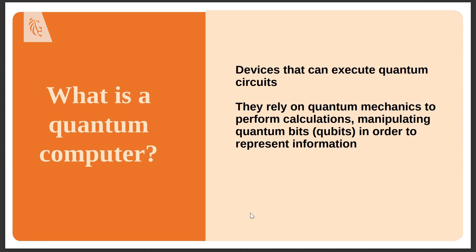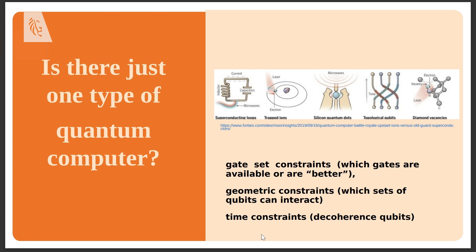Different technologies differ in their available gates, gate speeds, and qubit connectivity. There are also geometrical constraints: in most technologies qubits cannot all interact with each other, so two-qubit gates require the qubits to be adjacent. This creates a topology constraint requiring circuit routing. A third key difference is decoherence time — different technologies have different qubit lifetimes, allowing either deeper or shallower circuits to be executed.